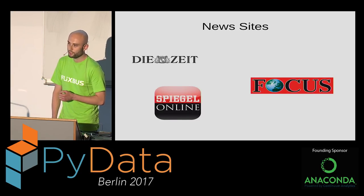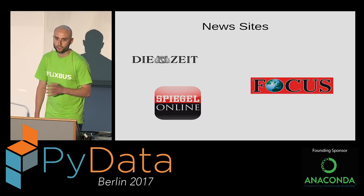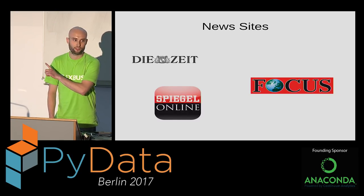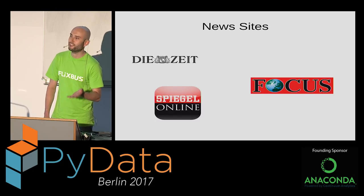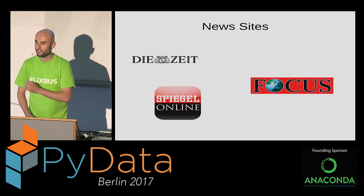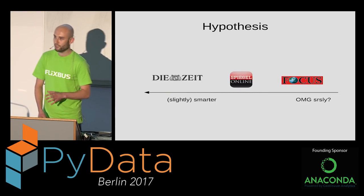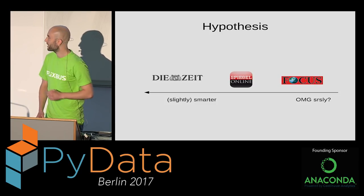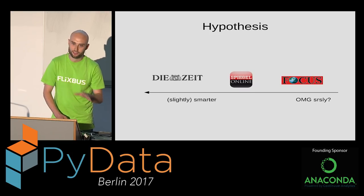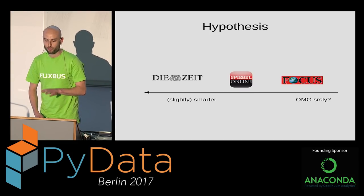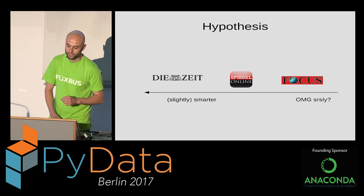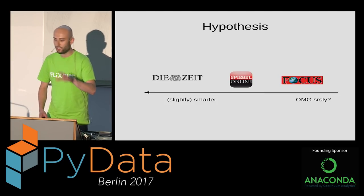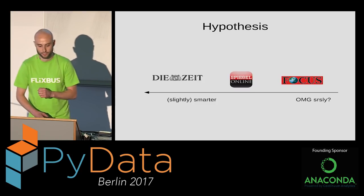These are the three news sites I gathered data from: Die Zeit, Spiegel Online, and Focus. There's an international audience here, but I guess some people from Germany are familiar with these. I had a working hypothesis in mind: there's undoubtedly a gradient in quality in the articles themselves, so I thought there might also be a gradient in the user comments — some slightly smarter comments on Zeit, and all the hatred and racism piling up at Focus.